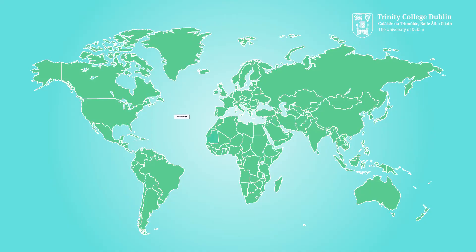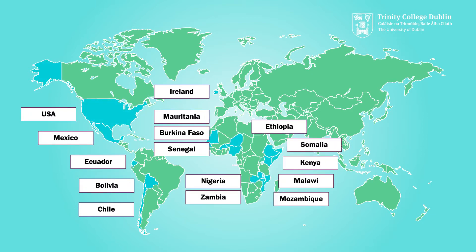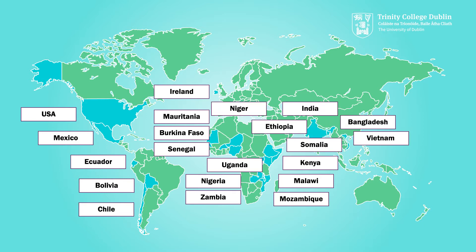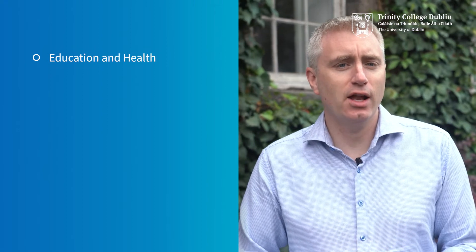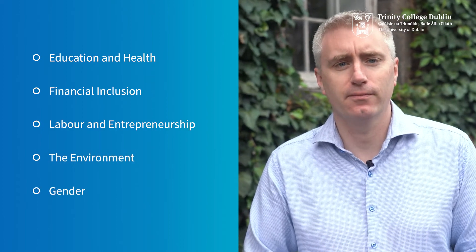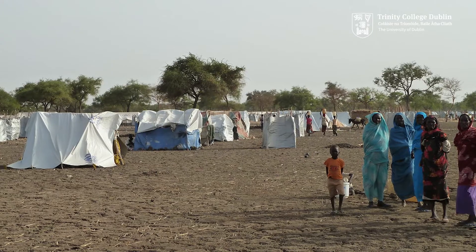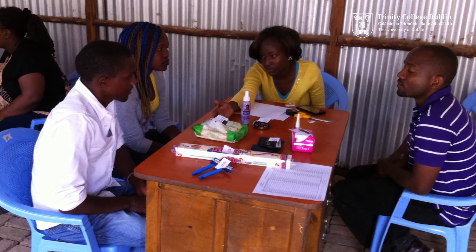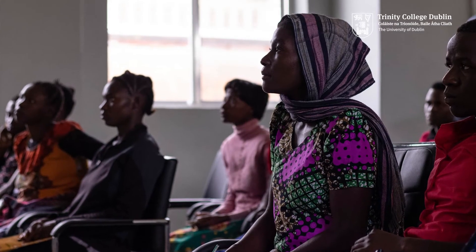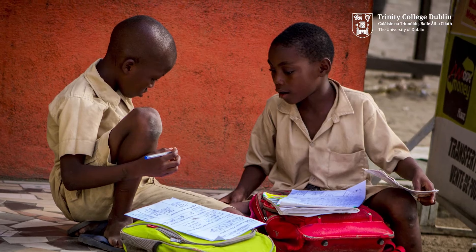So why should you take our course? Trinity is one of the leading centres for research and impact evaluation in Europe. With 30 researchers in total, we are also one of the largest clusters of development economists in Europe. Our projects span 20 countries, and we have eight research themes, including education and health, financial inclusion, labour and entrepreneurship, the environment, and gender. Trinity has particular expertise in mixed method evaluations, the management of large field trials, the measurement of hard-to-capture variables, and the politics of evidence. We also have a successful history teaching impact evaluation methods, and a number of our professors have won teaching awards.